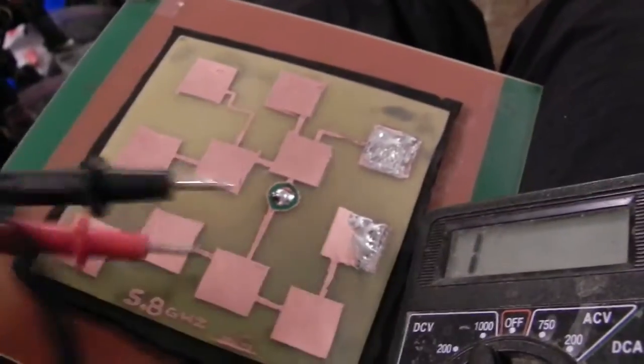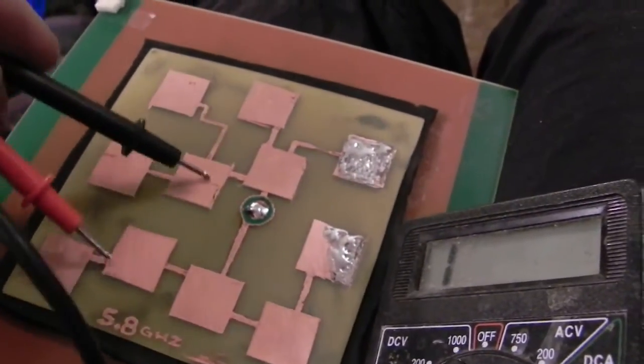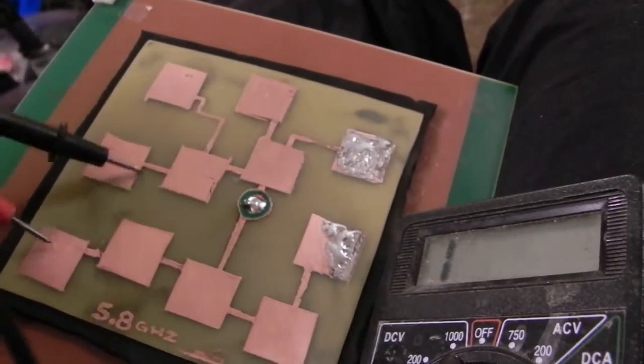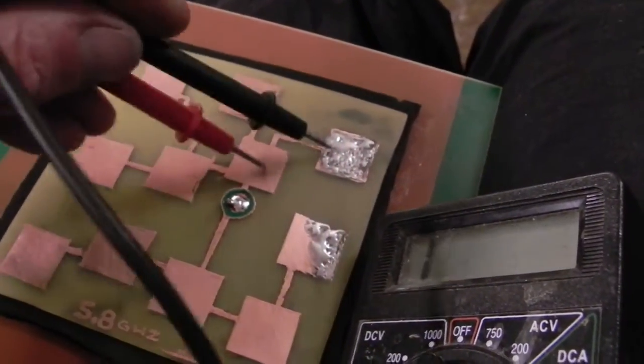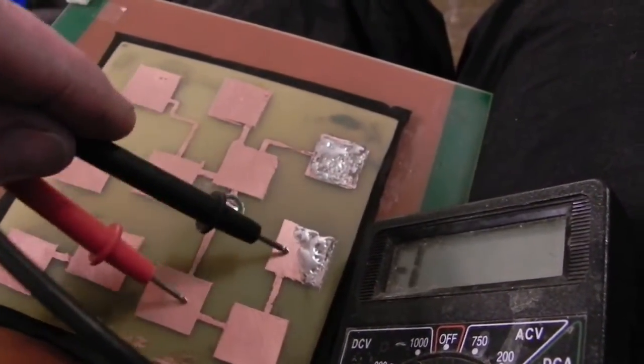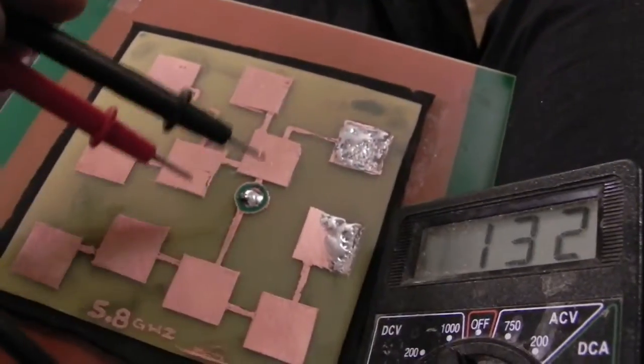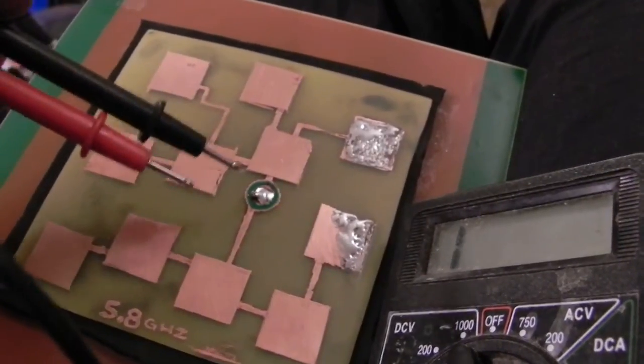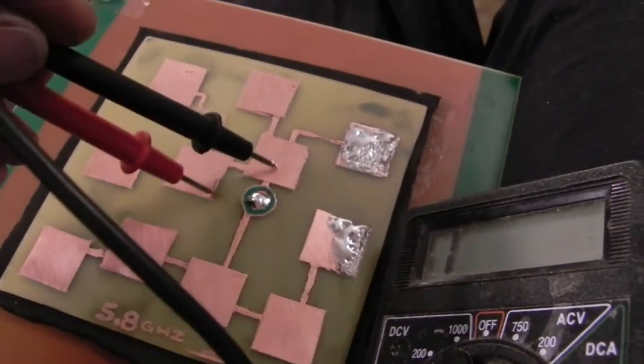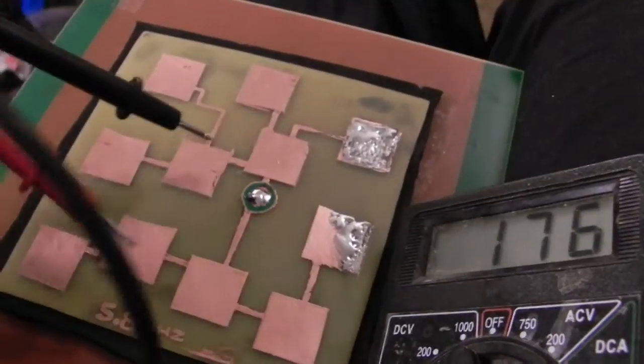Next step would be to take, on the ohms reading or beep continuity, check all your pads. Make sure that they all are connected. And then check this part, the center part, and the center part of the SMA pin. That's going to go in your receiver and make sure this is isolated from the reflector below.